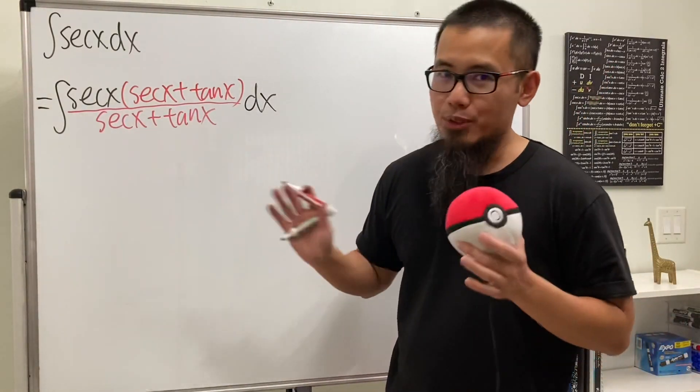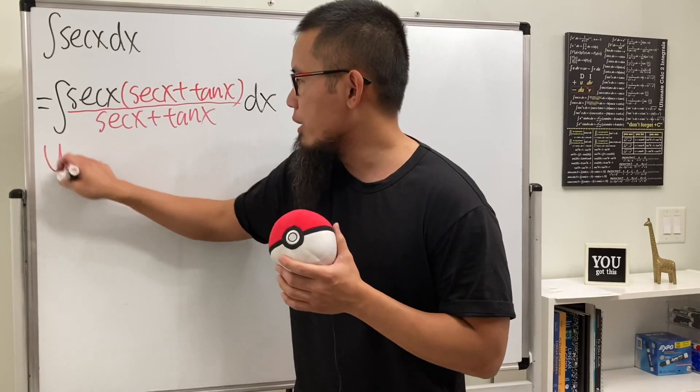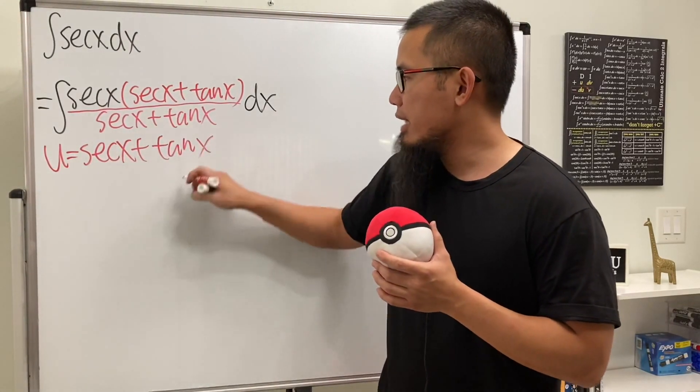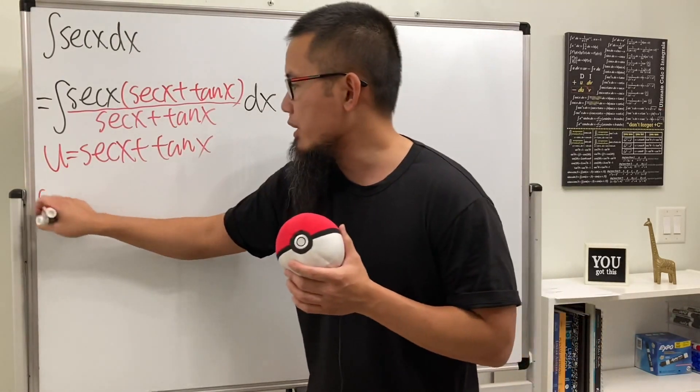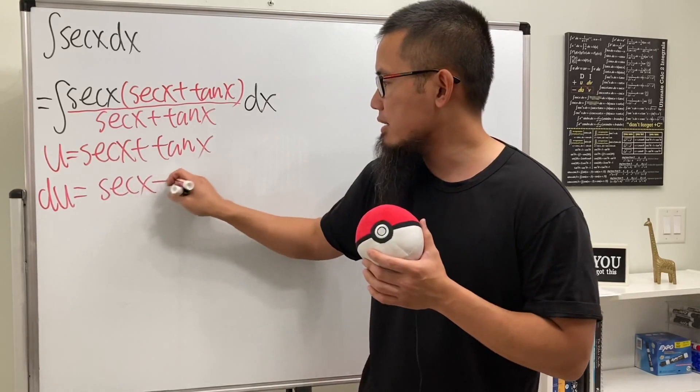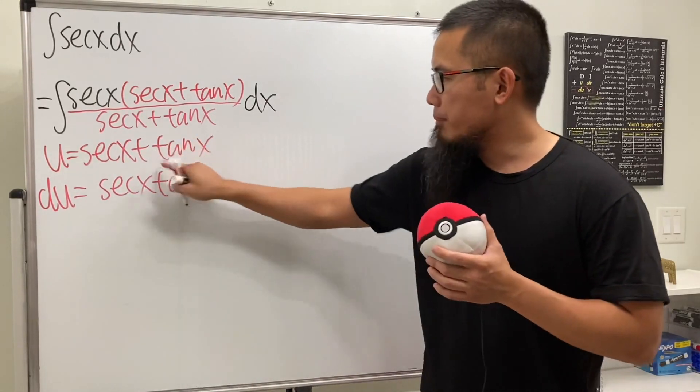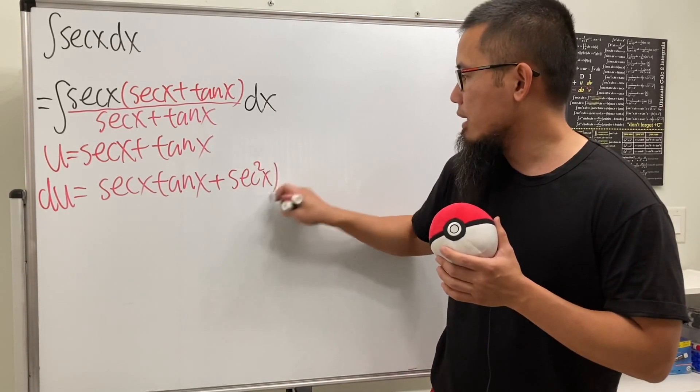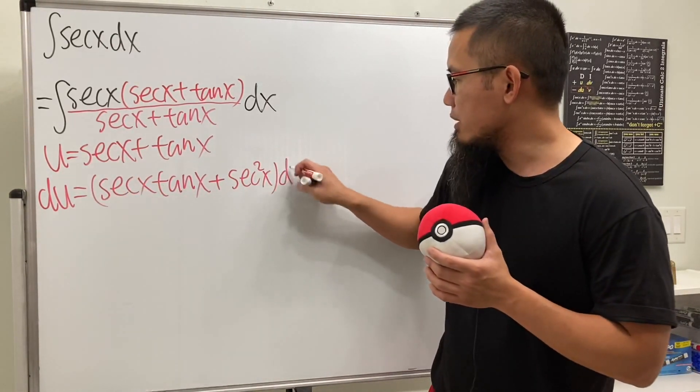All right, this works out really well because now we can just let u equal the bottom, namely secant x plus tangent x. And then when we differentiate this, we get du, and we will get the derivative of secant x, which is secant x times tangent x, and then plus the derivative of tangent x is secant squared x. And all this right here is with the dx.